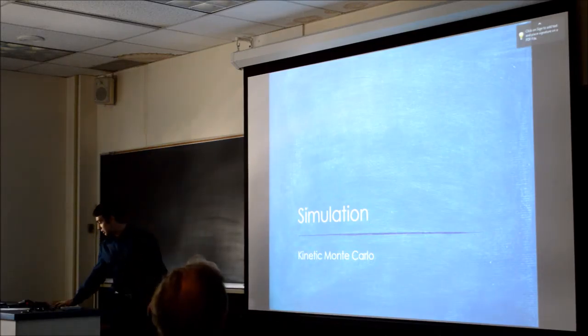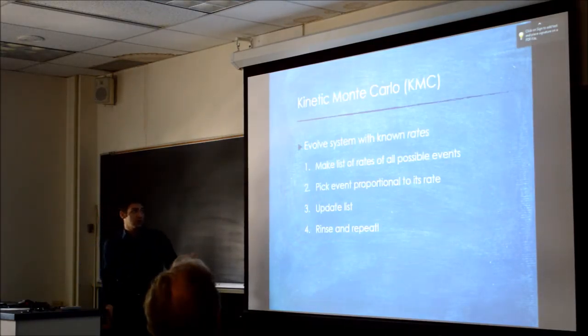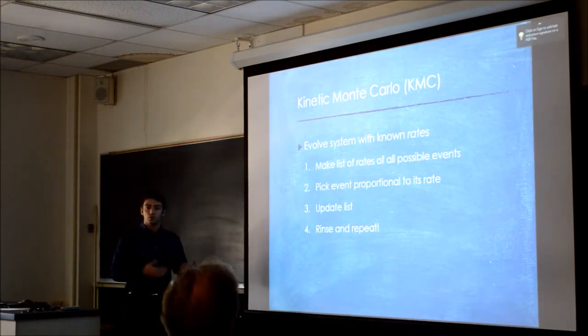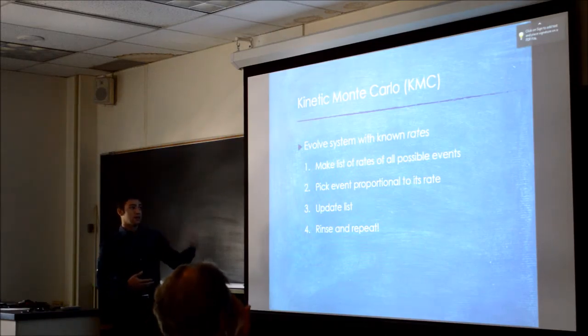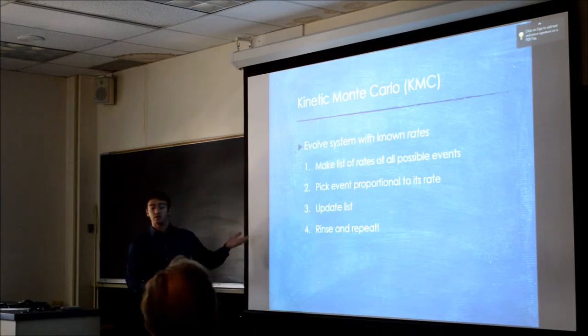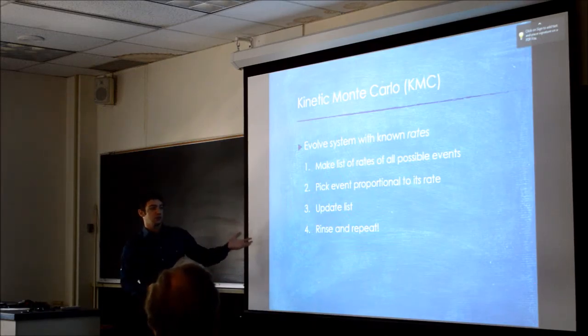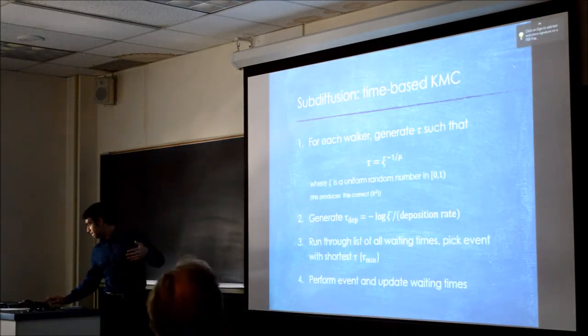So how do we simulate this? We know that the theory doesn't deal with it yet, but we can simulate it using a tool called Kinetic Monte Carlo. The program of Kinetic Monte Carlo is to evolve a system where you know the rates of the events of that system. The basic steps are: you make a list of all the rates of all the possible events that could happen in this system, and then you pick an event, and which event you pick is proportional to its rate compared to all the other rates. Then you update the lists, and then you do this process again. You keep evolving your system with these known rates.